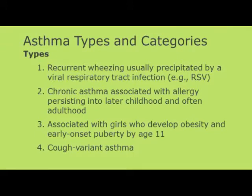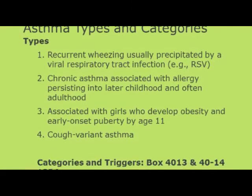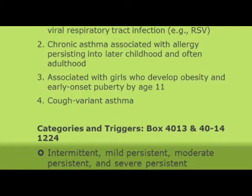That's an explanation of the peak expiratory flow meter and how to read it. Guidelines are on page 1226, and ATI also summarizes this. There are different categories of asthma. On page 1224, it describes intermittent asthma, where symptoms are less than two days per week with no interference with normal activity - that's the least concerning category.